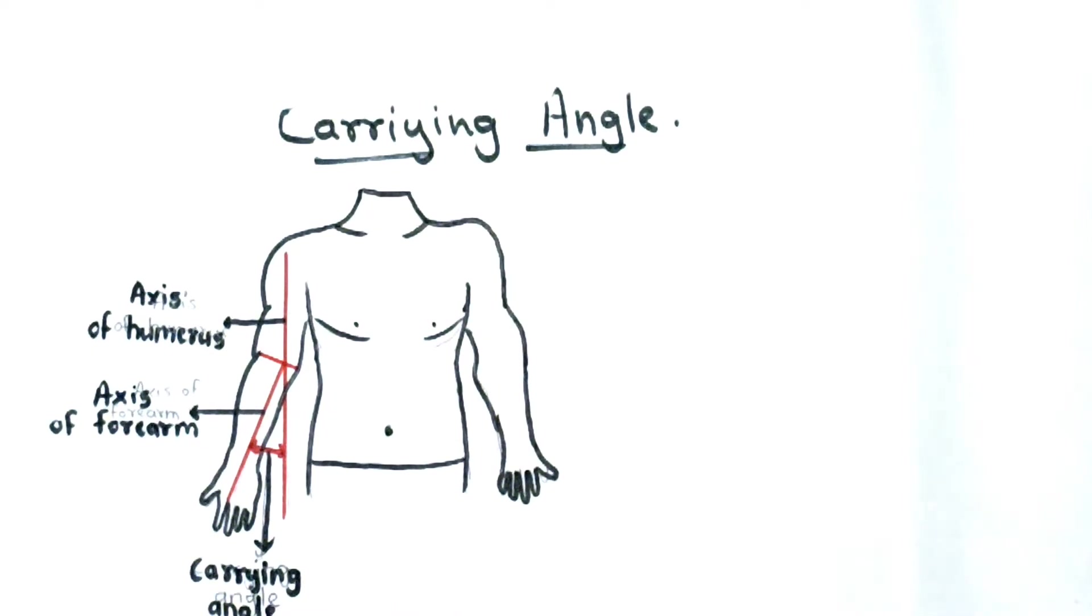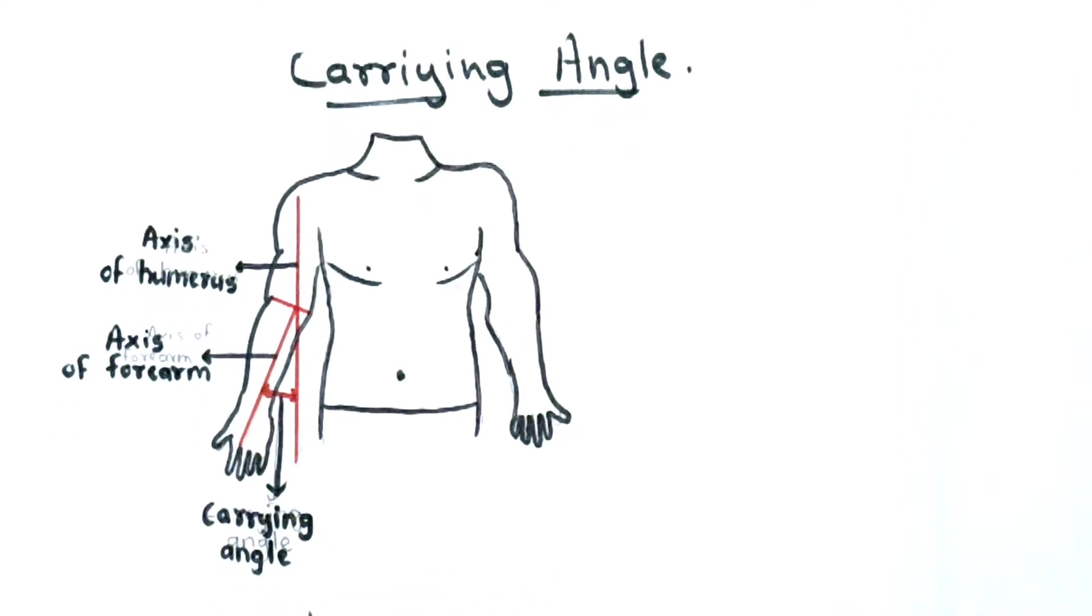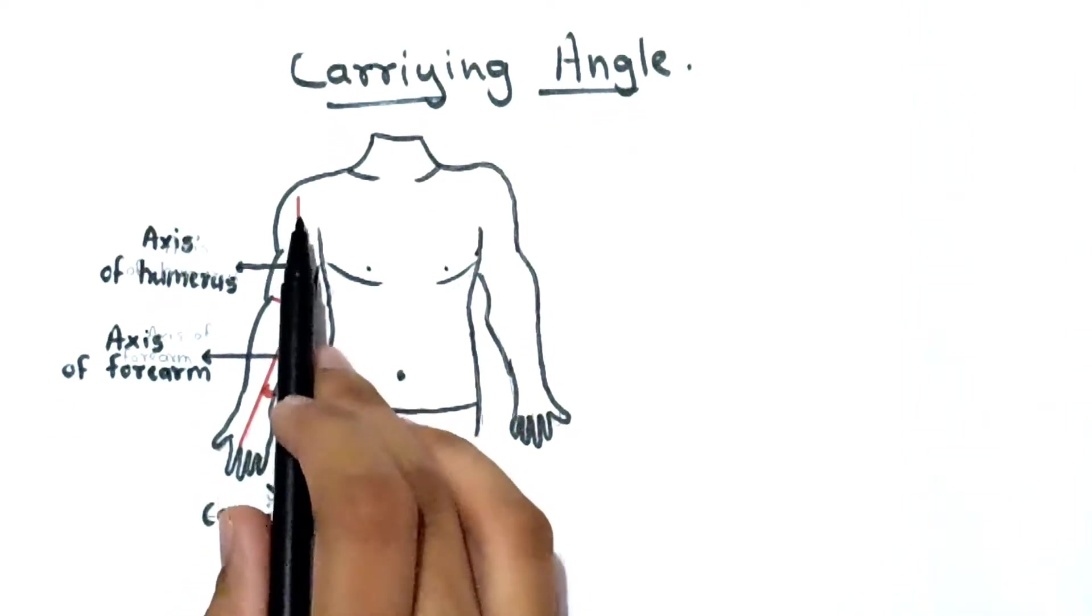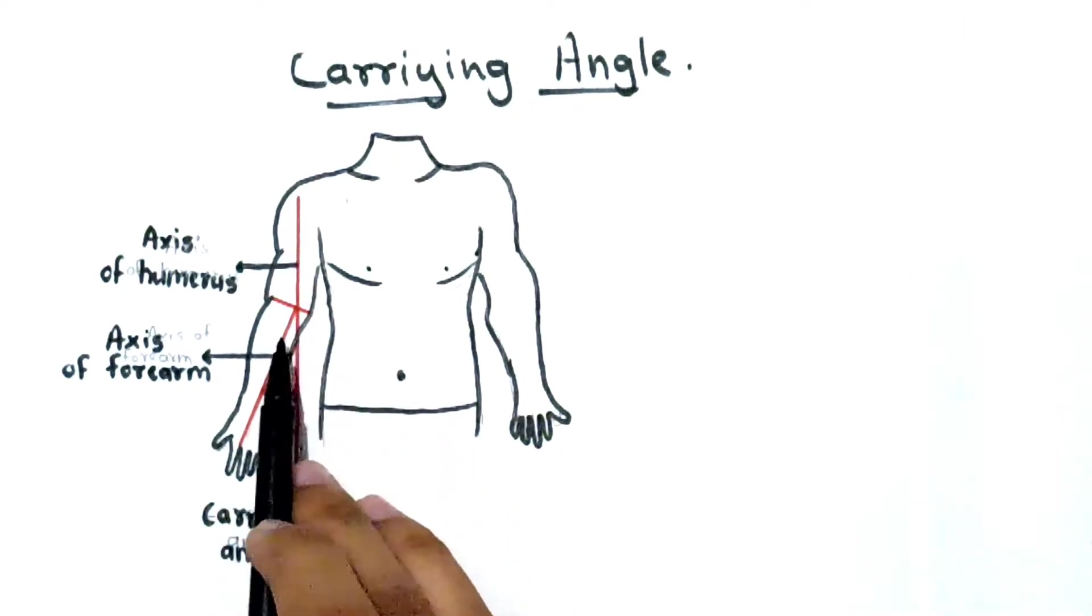So what is the carrying angle? Basically it is an angle between the vertical axis of your arm and forearm.